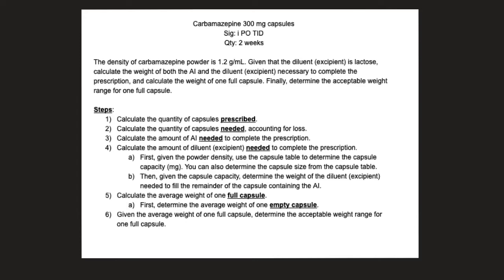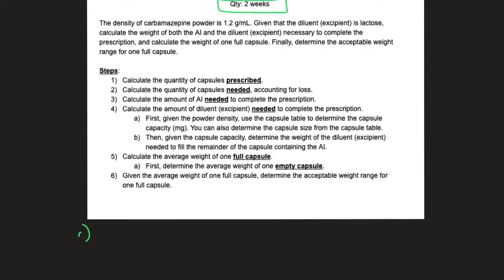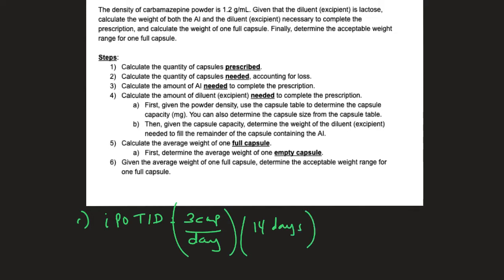Step one: calculate the number of capsules prescribed. The SIG is one capsule by mouth, three times a day for two weeks. So one capsule × three times per day = three capsules per day, times 14 days gives you 42 capsules. That's the amount of capsules prescribed.